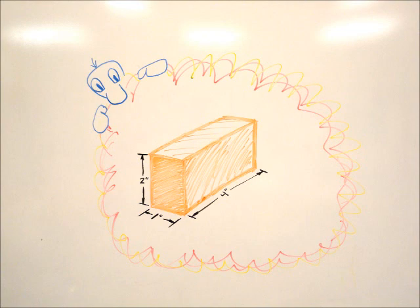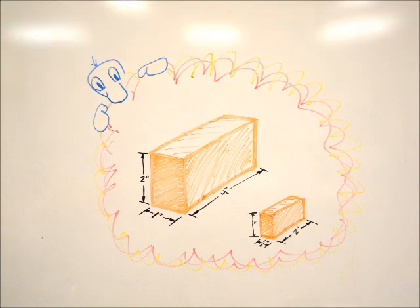That's not so bad when our object has nice and easy measurements like this one. At half scale, this 1 inch by 2 inch by 4 inch block would measure a half inch by 1 inch by 2 inches.